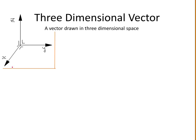A three-dimensional vector is a vector drawn in three-dimensional space. Here we have our x-axis, our y-axis, and now we have a third axis, the z-axis. This creates our three-dimensional space.